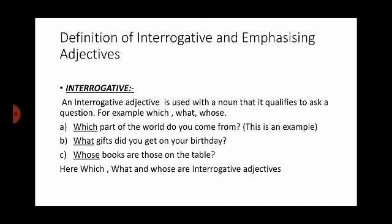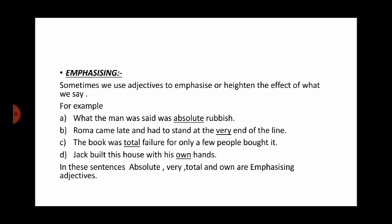Here are three examples. 'Which part of the world do you come from?' — here 'which' is the interrogative adjective. 'What gifts did you get on your birthday?' — someone is asking what kind of gifts you received, so 'what' is interrogative. 'Whose books are those on the table?' — someone is asking about the books on the table, so 'whose' is interrogative. In these three sentences, which, what, and whose are interrogative adjectives.